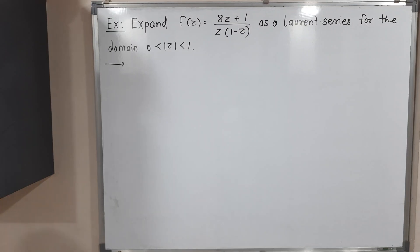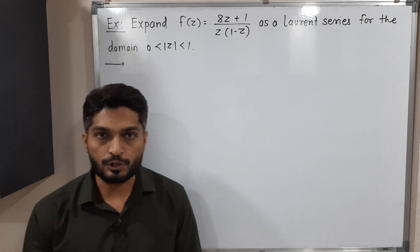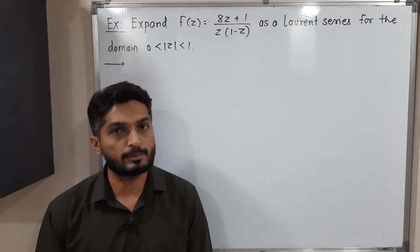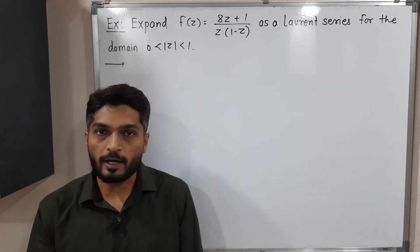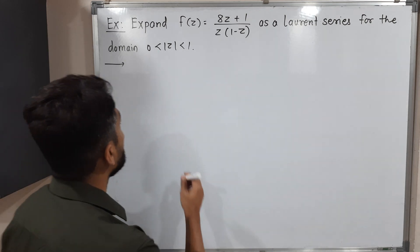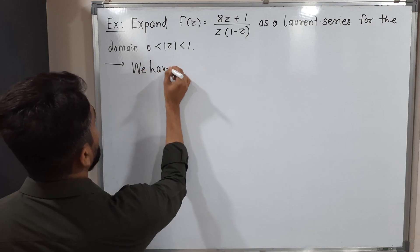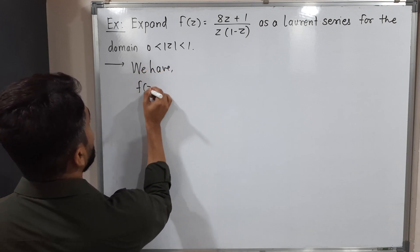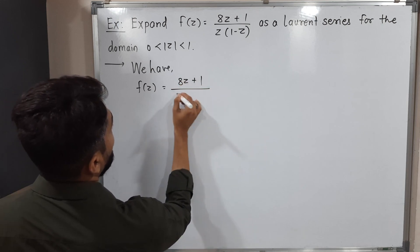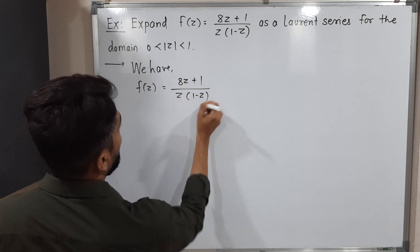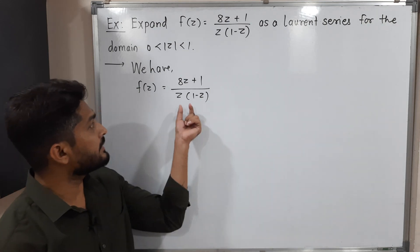In this video we are going to solve this problem. We have this function and we have to find the Laurent expansion of this function for this domain. So the given function is f(z) = (8z + 1) / [z(1 - z)].